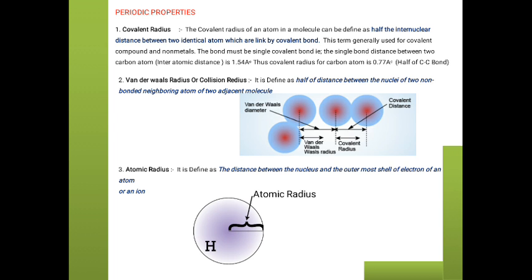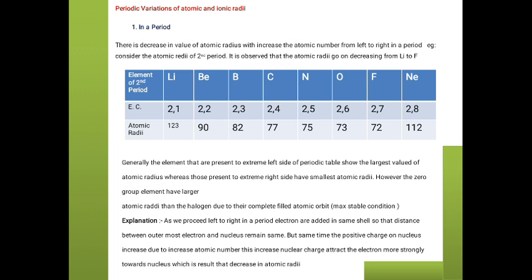Now let's discuss the periodic variation of atomic and ionic radius. As we move from left to right in the periodic table — that is called a period — and as we move from top to bottom, that is called a group. There is a decrease in the value of atomic radius with increasing atomic number from left to right in a period.